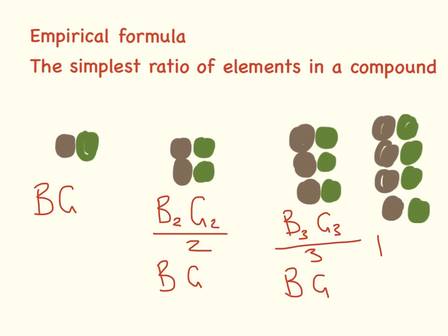Same with this one: brown 4, green 4 — we can divide all of these by 4, and the simplest ratio is brown, green.